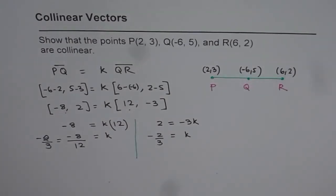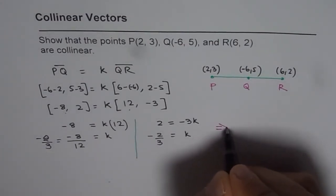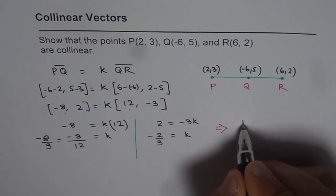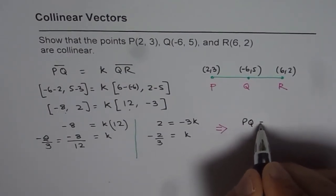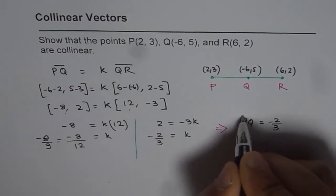we can write from here, since we get K as minus 2 over 3, so from here we can say that PQ is equals to minus 2 over 3 QR.